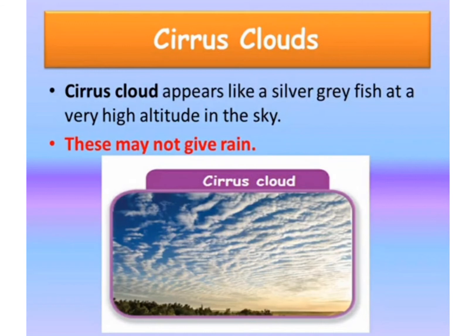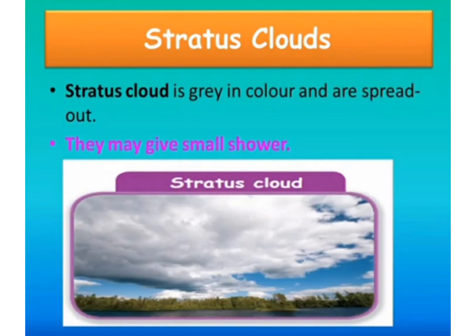The second form of cloud is stratus cloud. Stratus clouds are grey in colour and are spread out — very much distributed. They may give a small shower. Shower means rain.